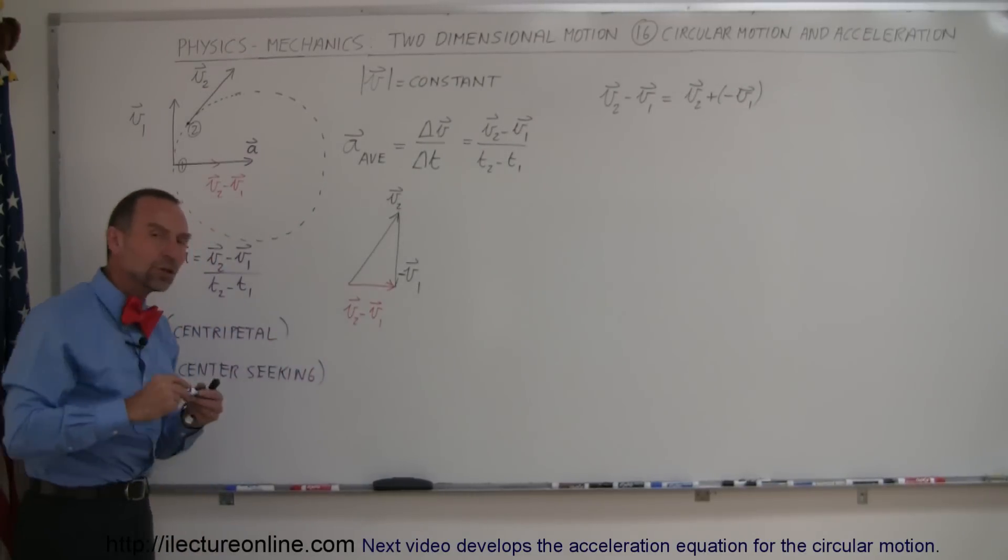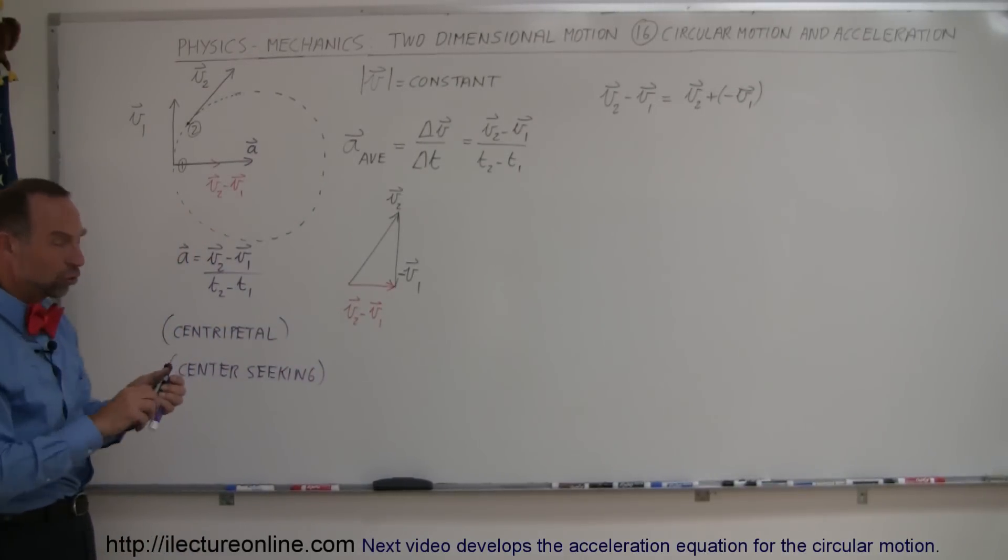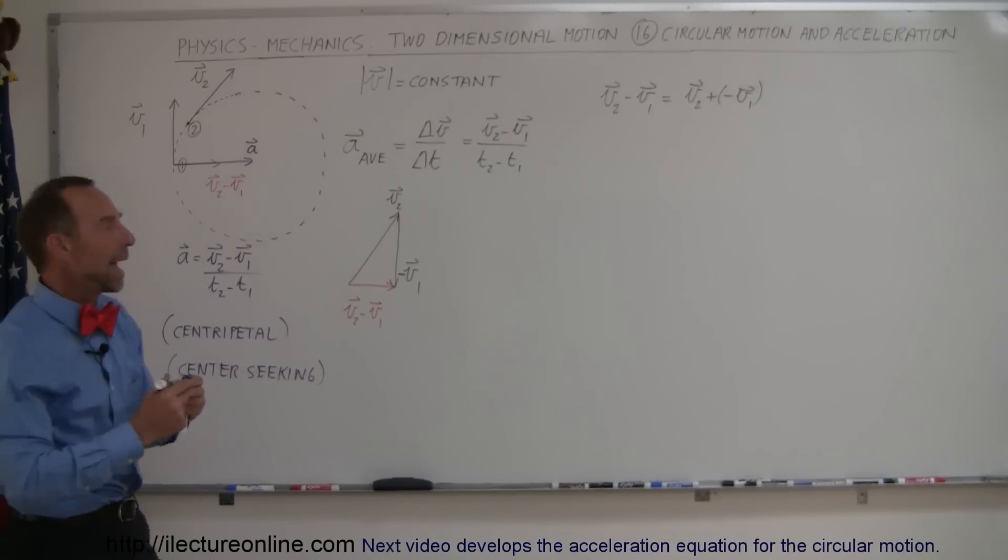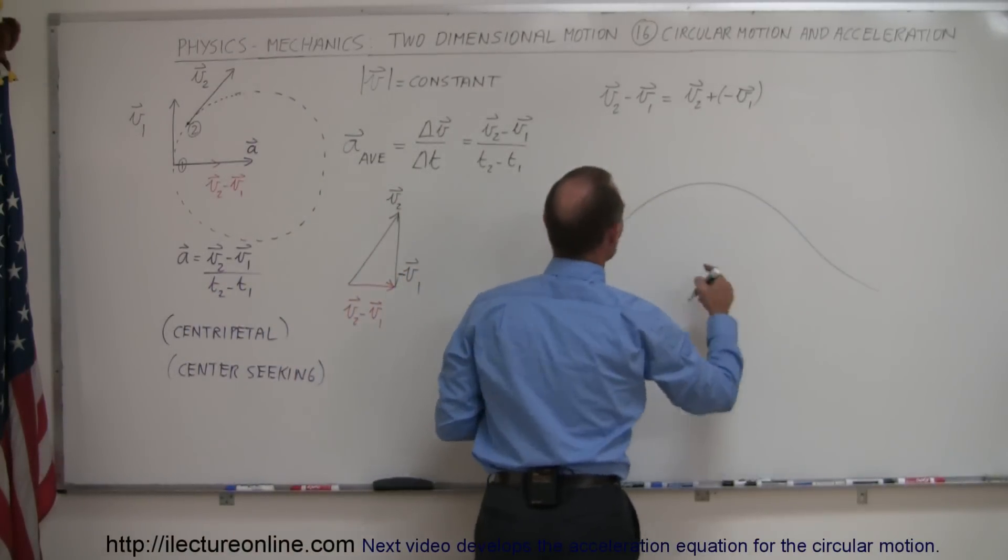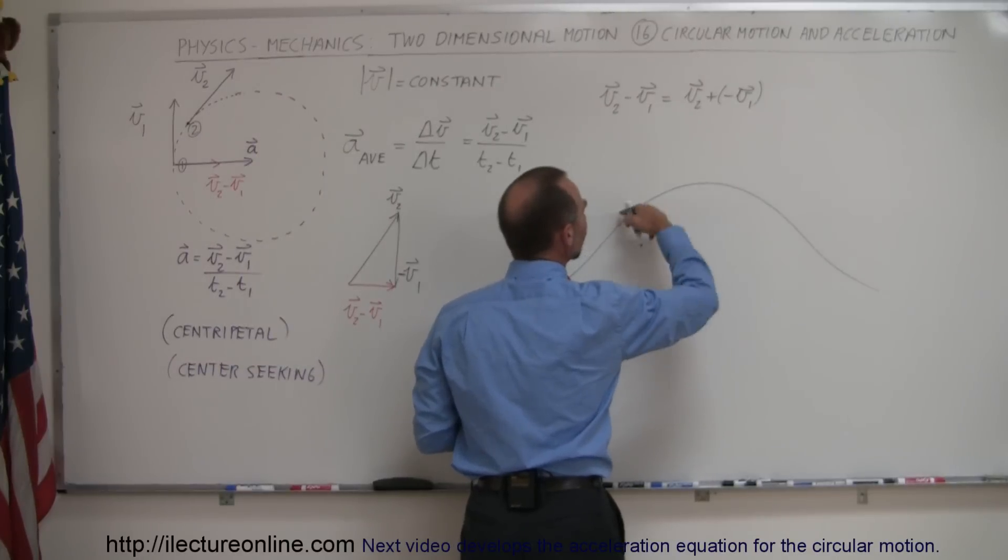And this of course happens even when the object doesn't travel around a circle, simply along a curved path. So let's say that this is the path of an object, and you can see that while it's traveling this curved path, it's changed in direction.